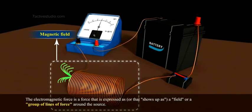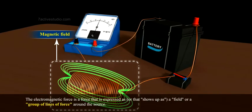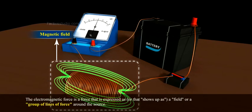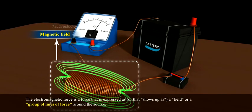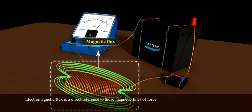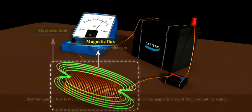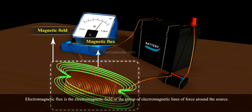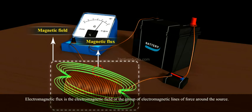Electromagnetic flux. The electromagnetic force is a force that shows up as a field or a group of lines of force around the source. Electromagnetic flux is a direct reference to those magnetic lines of force — it is the electromagnetic field or the group of electromagnetic lines of force around the source.